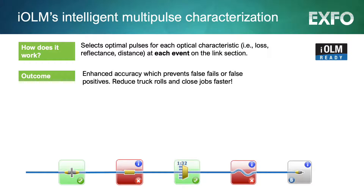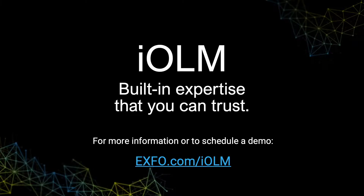For any type of network, IOLM maps every element onto an easy-to-read link view while providing actionable troubleshooting guidance. Overall, this means reliability and accuracy that prevents false fails or false positives, making sure everything is characterized right the first time. IOLM leverages EXFO's leading global expertise and acclaimed innovative advances in optical testing. Schedule a demo today.